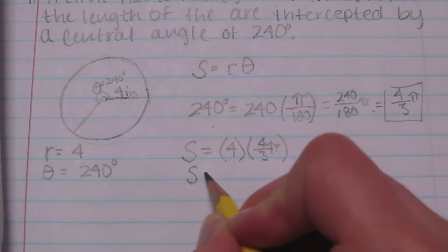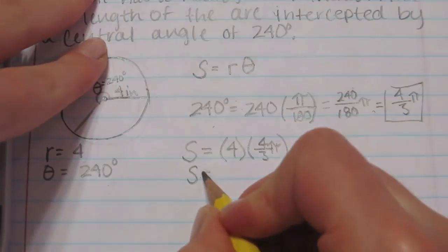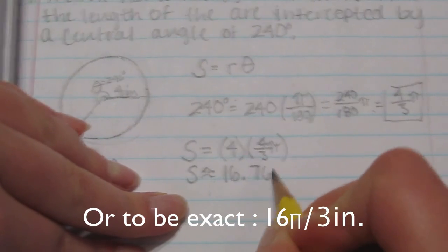So the arc length equals, well is about, because it's an estimation, 16.76 inches.